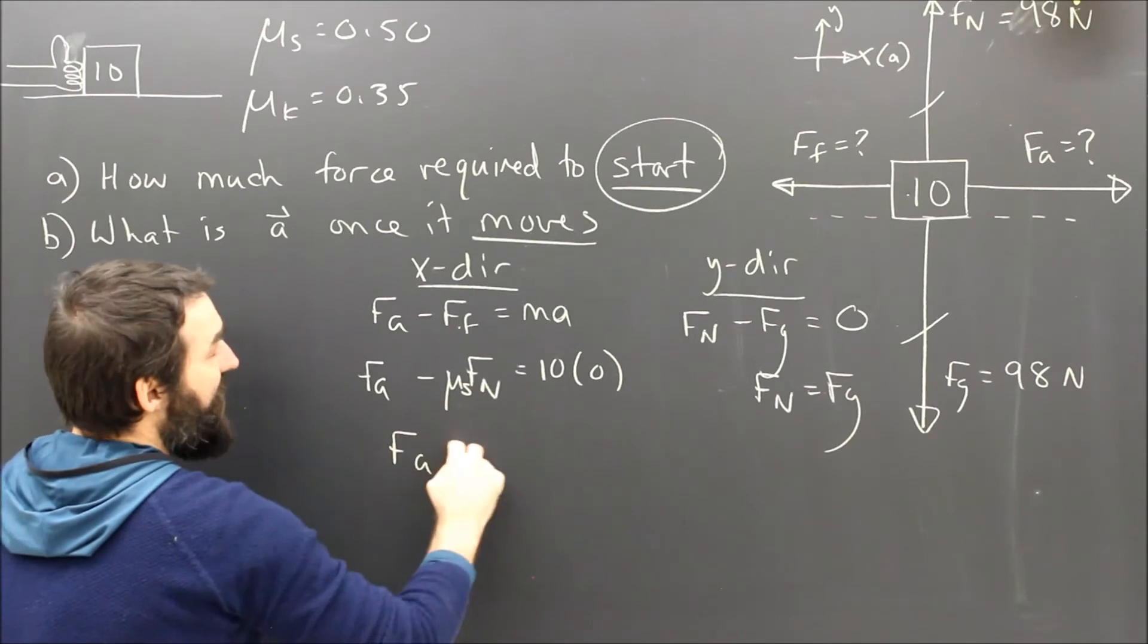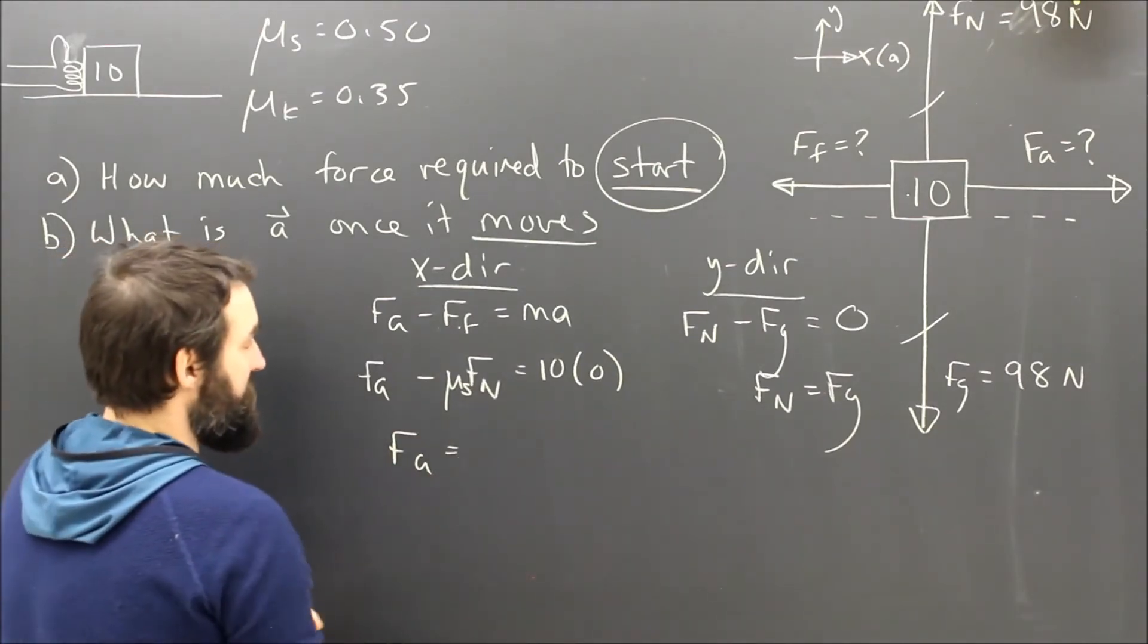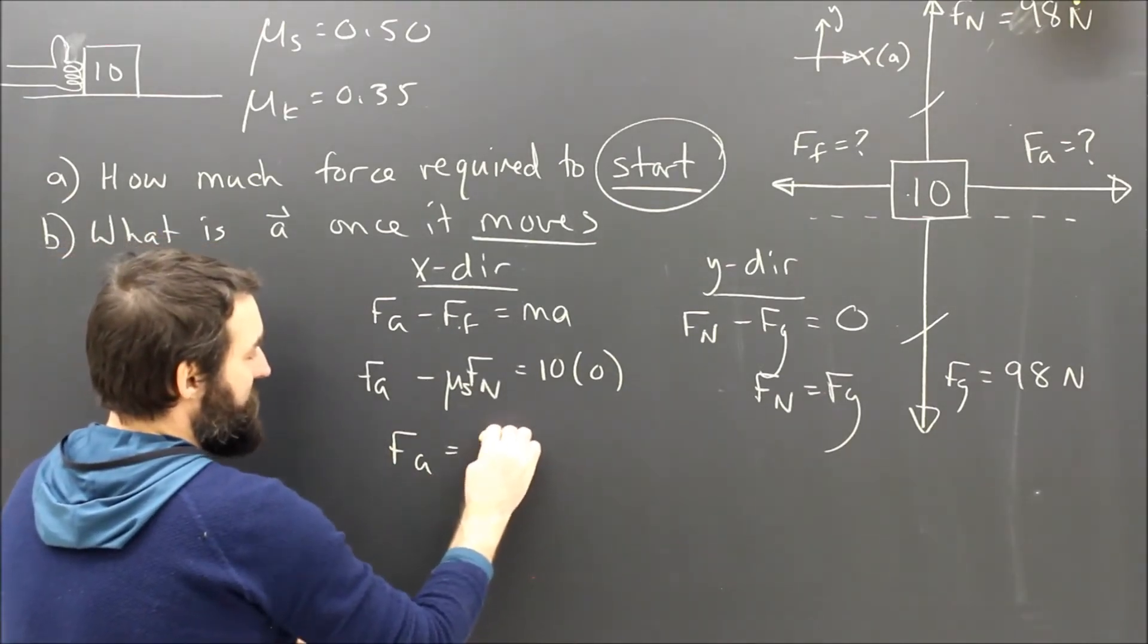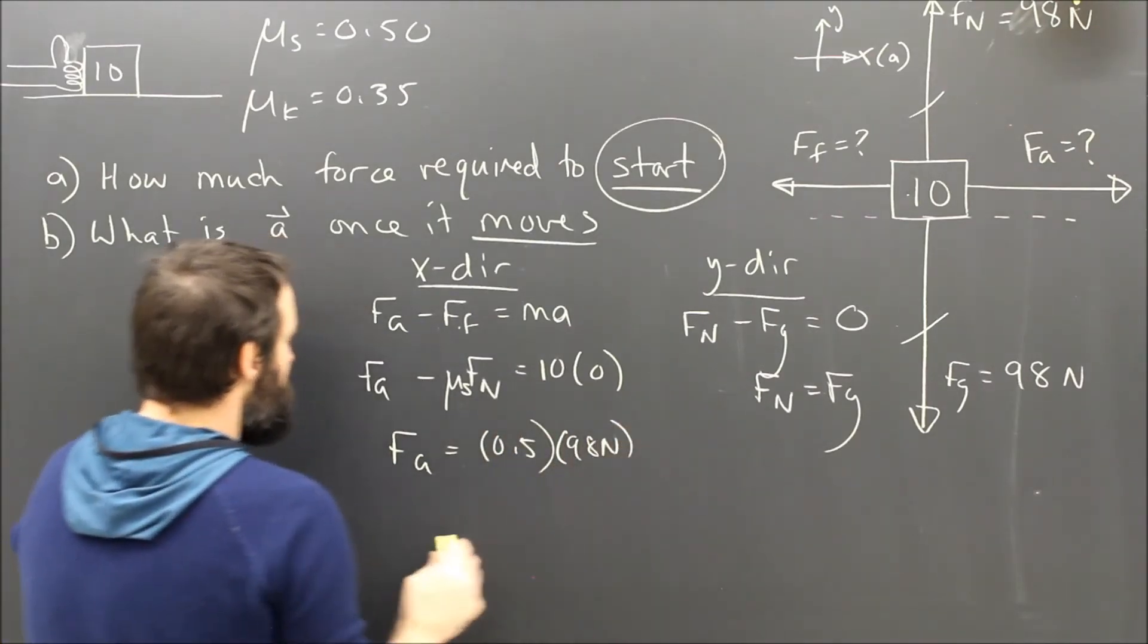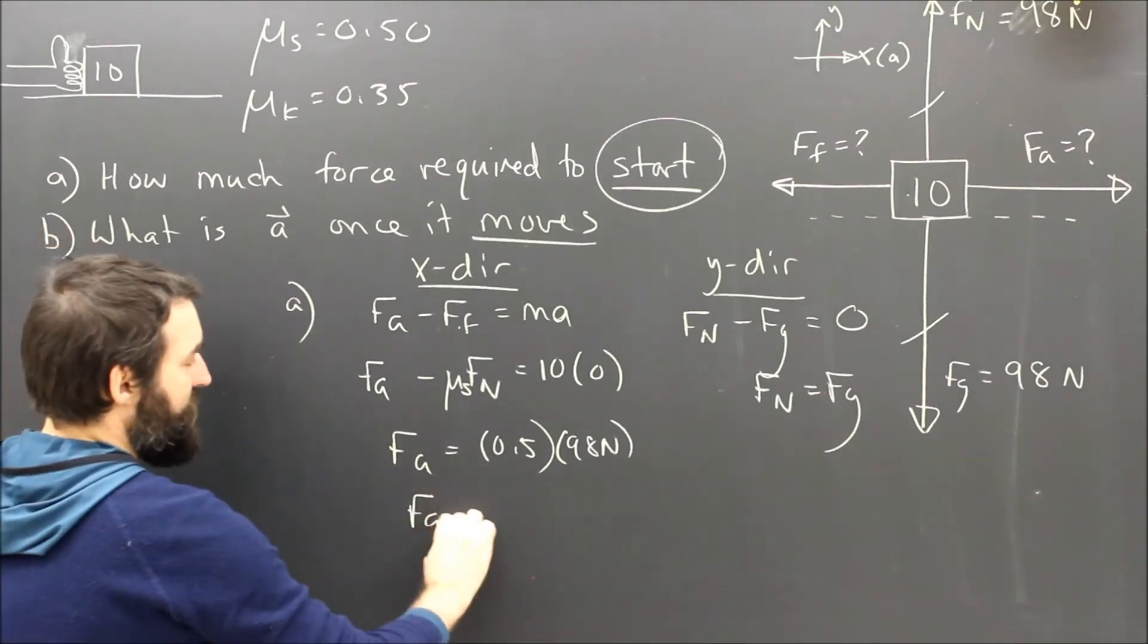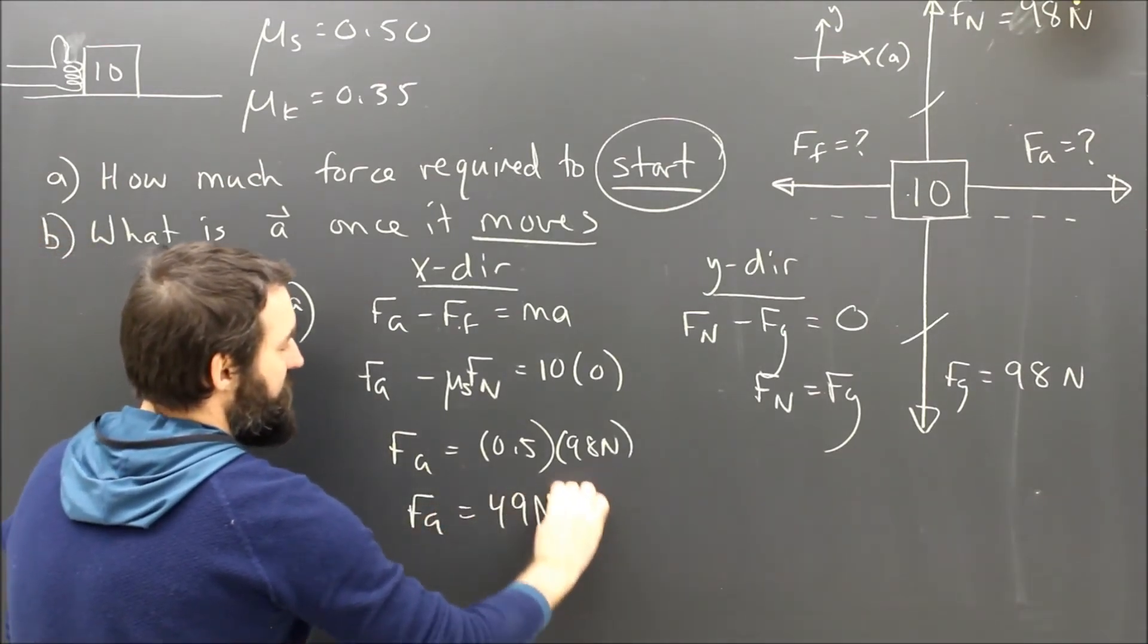So clearly, Fa is equal to friction in part A when it starts to go, which is μ Fn, which is 0.5 because it's static, times 98 Newtons. So for part A, the applied force is going to be 49 Newtons.